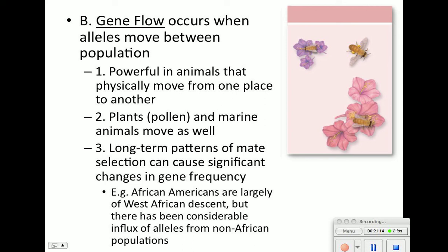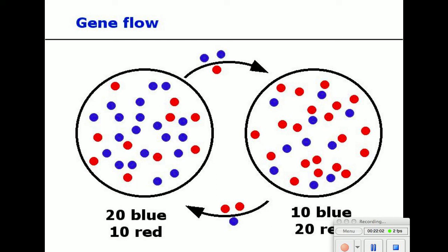The second agent of evolutionary change is gene flow — how alleles move between populations. It's very powerful in animals because animals can physically move from place to place. Plants aren't rooted in movement, but their pollen does move. Marine animals also migrate within the oceans. We can look at long-term patterns of mate selection — for example, African-Americans are largely of West African descent, but there has been considerable influx of alleles from non-African populations through interbreeding.